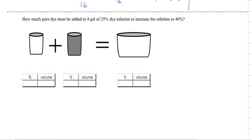So on this one it says how much pure dye. So we don't know that amount. And any time you see the word pure, you want to put 100 percent because you've always heard that phrase, 100 percent pure. Well, there you go. And then we're going to mix it with 4 gallons of a 25 percent to obtain a 40 percent. And the same exact rule applies. This one plus this one equals that one.